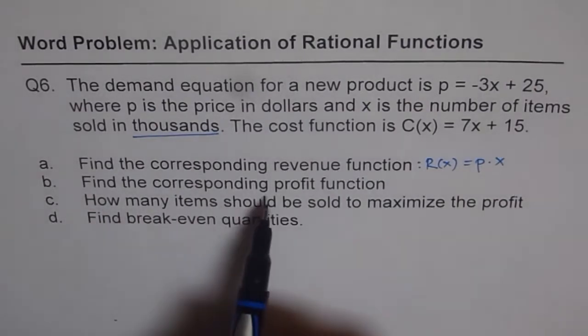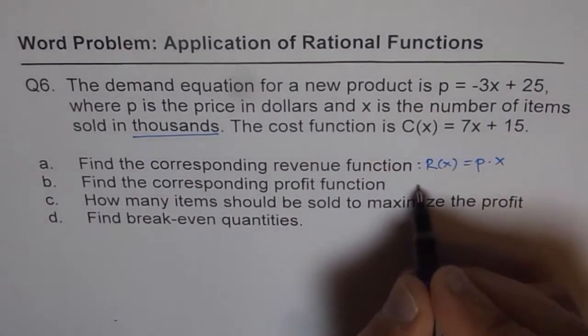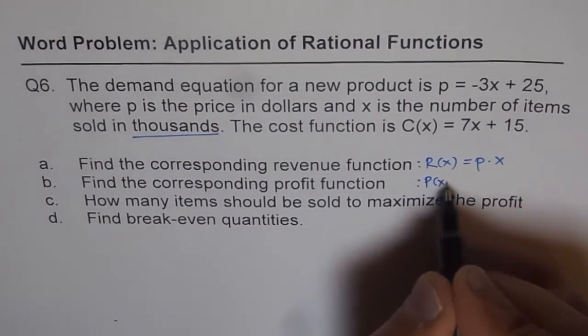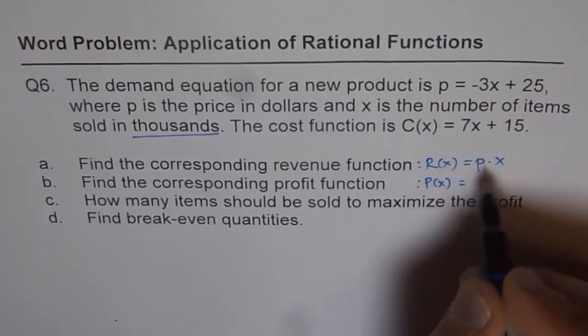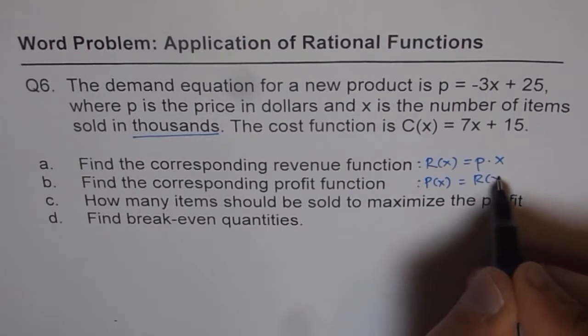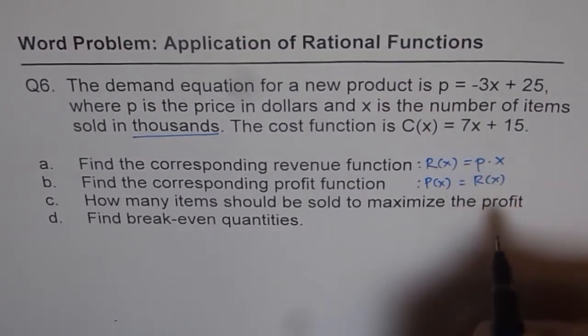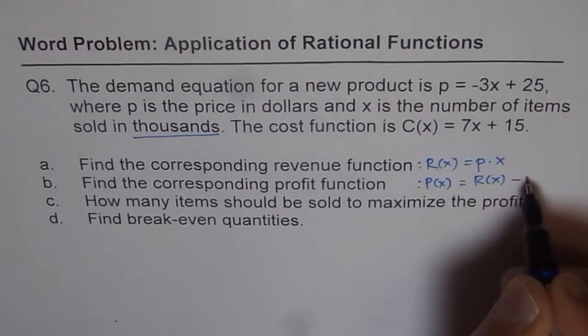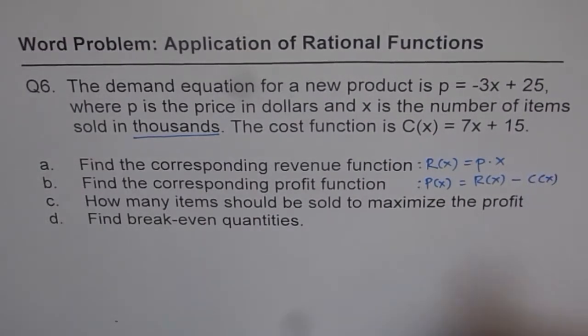Find the corresponding profit function. Now, profit function is revenue minus cost. So revenue, whatever you calculate from part A, take away the given cost which is C(x).